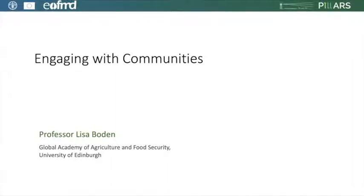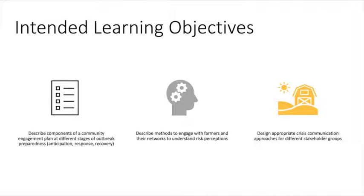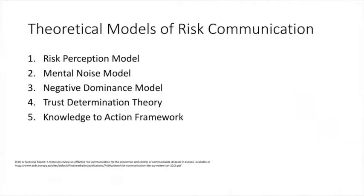The intended learning objectives for this particular lecture are: to describe the components of a community engagement plan at different stages of an outbreak — whether you're talking about anticipation, response, or recovery; to think about and describe methods to engage with farmers and their networks in order to understand risk perception; and then to design an appropriate crisis communication approach for different stakeholder groups in different scenarios, which we'll practice in the live session.